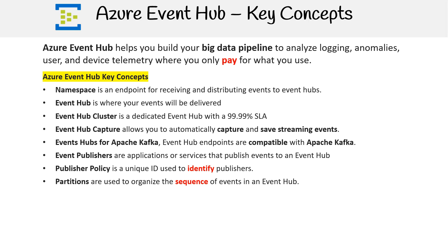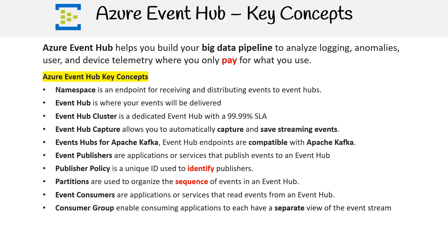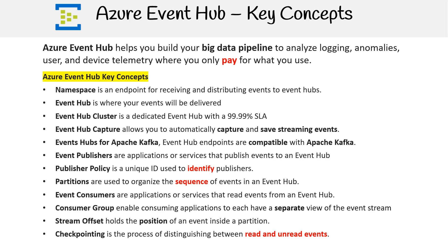Partitions are used to organize the sequence of events in an event hub. Event Consumers are applications or services that read events from an event hub. Consumer Groups enable consuming applications to each have a separate view of the event stream. Stream Offset holds the position of an event inside a partition. Checkpointing is the process of distinguishing between read and unread events.